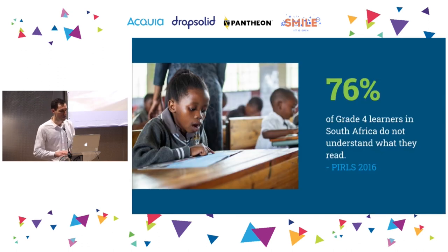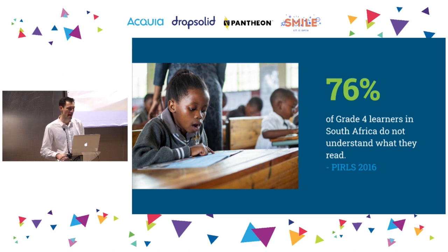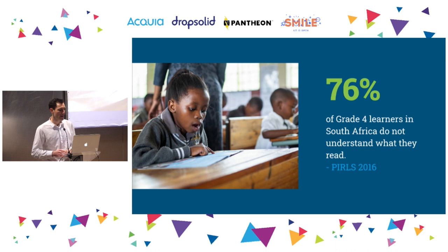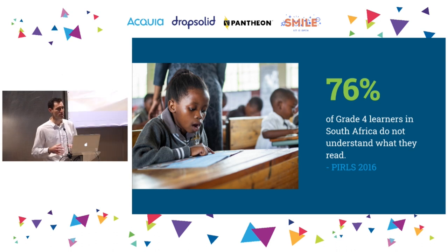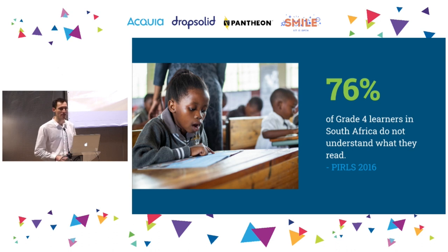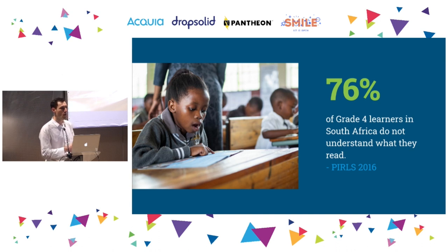In South Africa, about 76% of grade four learners — aged nine to ten years old — cannot read for understanding. This is primarily in English. When learners reach grade four, they transition from learning subjects in their home language to learning entirely in English. Not only are they struggling through the difficulty of learning these subjects, they're now having to learn in their second or third language. And for many of them, English is not spoken at home, not by their parents, not by their friends — they have no exposure outside the classroom.